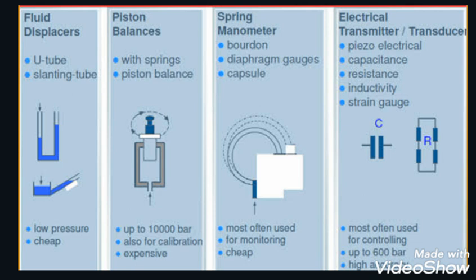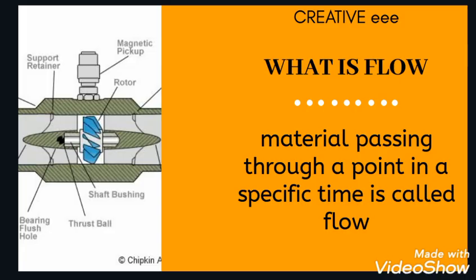There are different types of pressure measuring instruments: fluid displacers like U-tube and slanting tube; piston balances like with spring or piston balance; spring manometers like Bourdon, diaphragm gauge, capsule; and electrical transmitters like piezo-electrical, capacitance, resistance, inductive and strain gauge. There are many types.